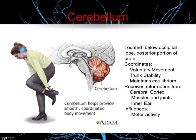The cerebellum coordinates voluntary movement, helps with balance and equilibrium, and controls fine motor control. It receives information from the cerebral cortex, from muscles and joints, and from the inner ear, which plays a big role in balance. Think of it as influencing motor activity. It's tucked in the back and below the cerebrum — the image of someone balancing on one foot while pulling on their shoe illustrates what the cerebellum does.